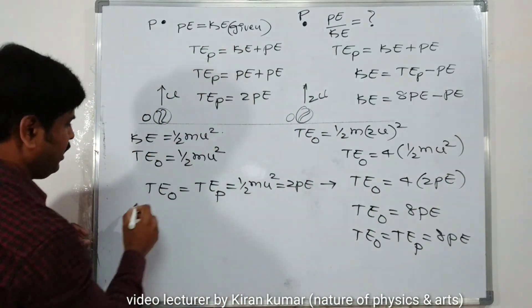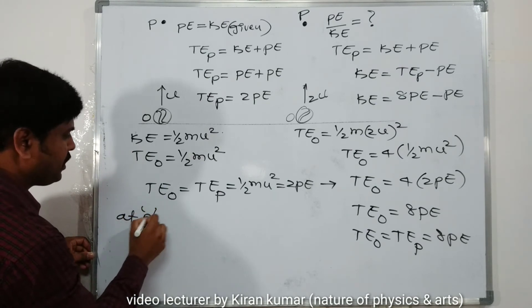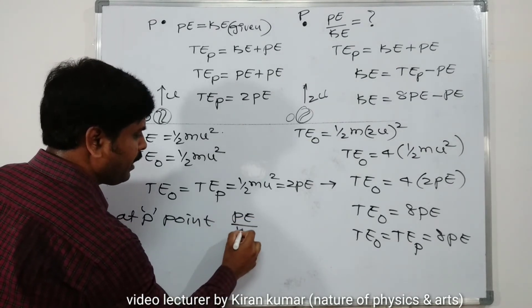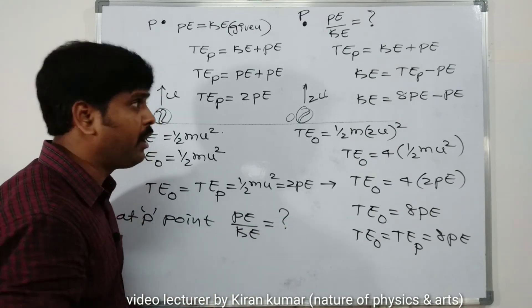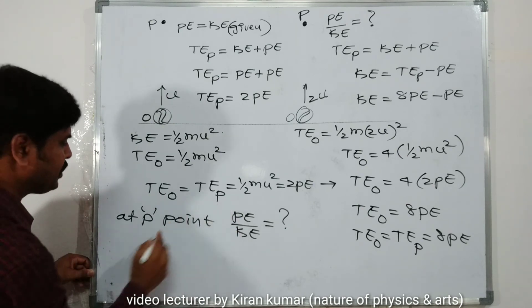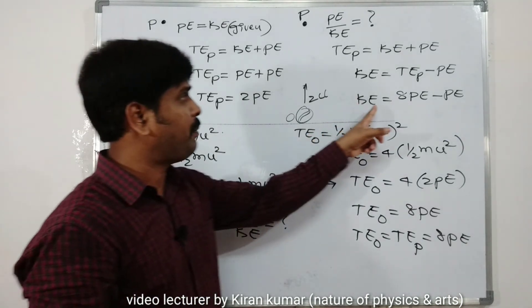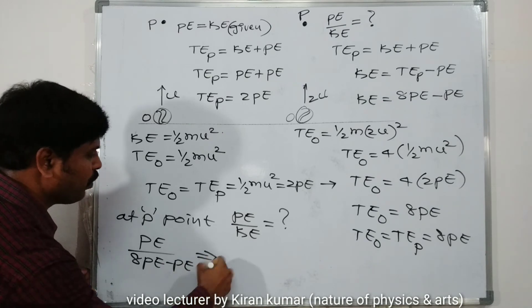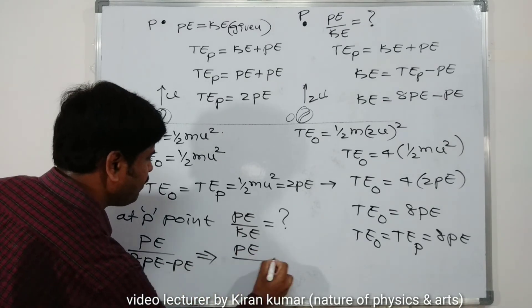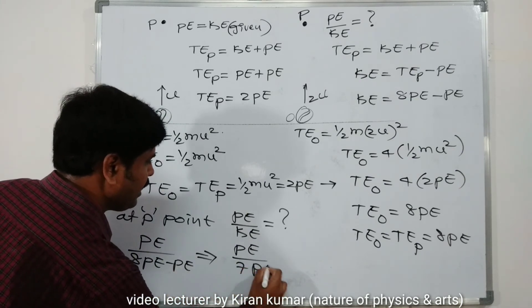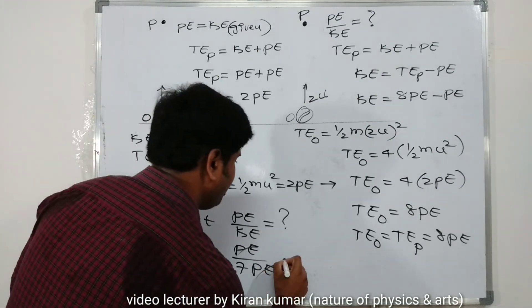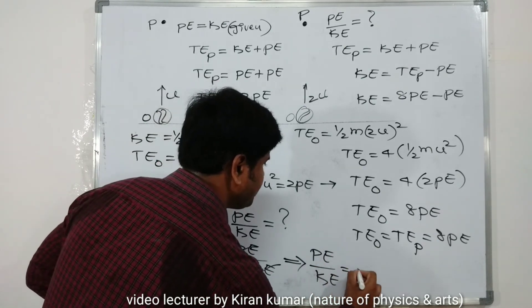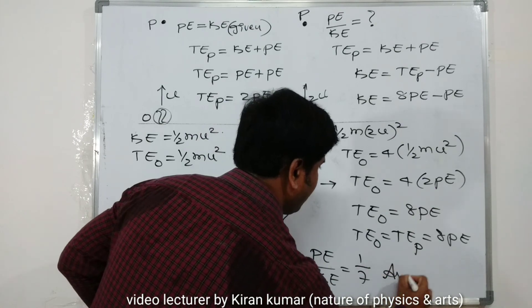Our question asks for the ratio of potential energy to kinetic energy at point P in the second condition. Potential energy is PE and kinetic energy is 7PE. So PE divided by KE = PE / 7PE. The PE cancels out, giving us the final answer: PE to KE = 1:7.